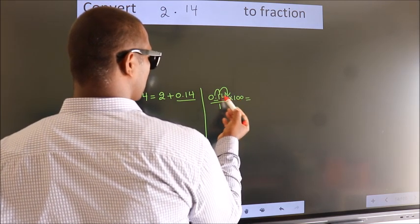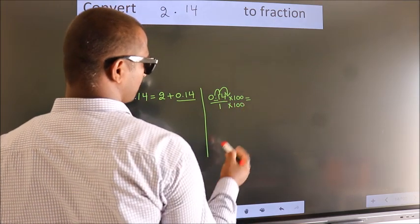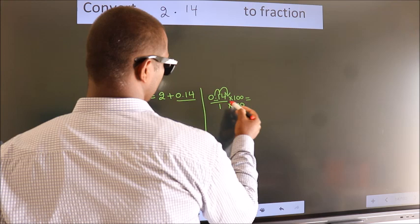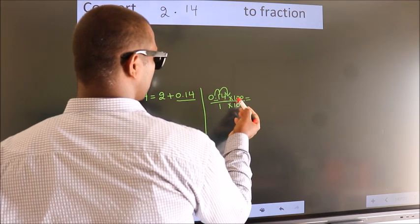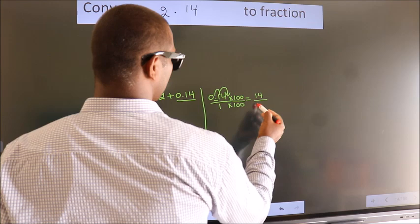Whatever you are multiplying in the numerator, in the denominator also do the same. Next, 0.14 into 100 is 14. 1 into 100 is 100.